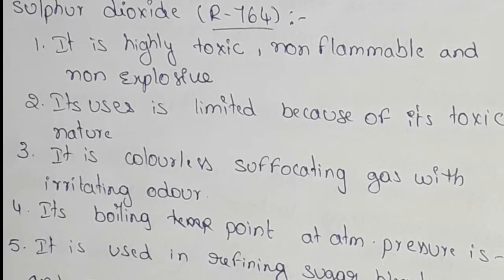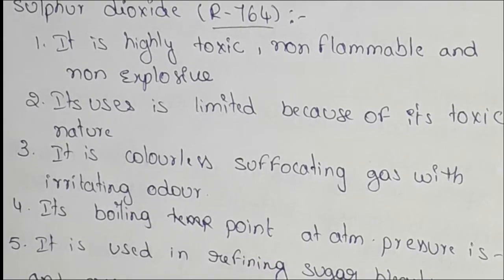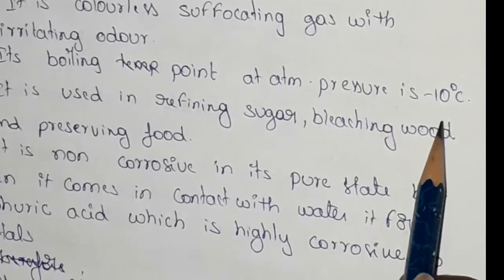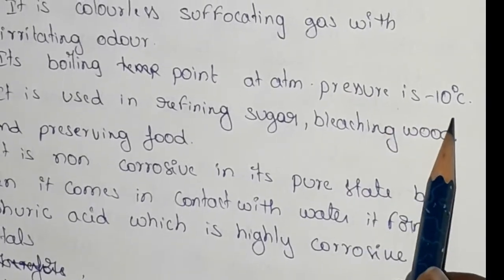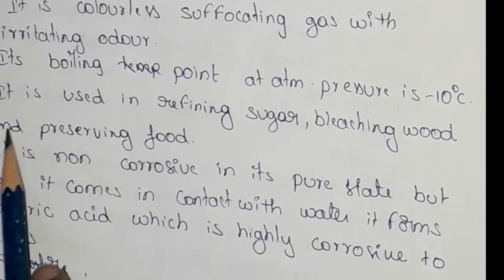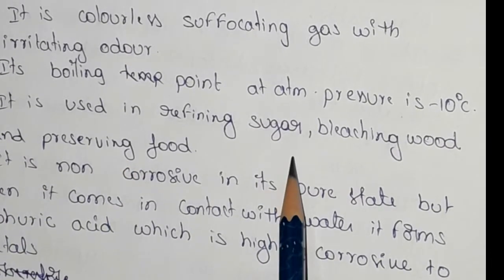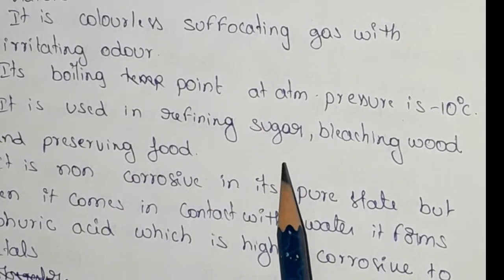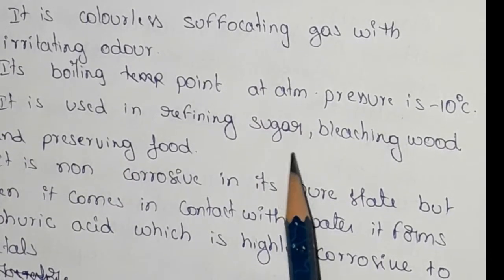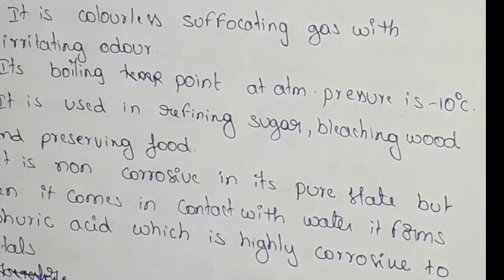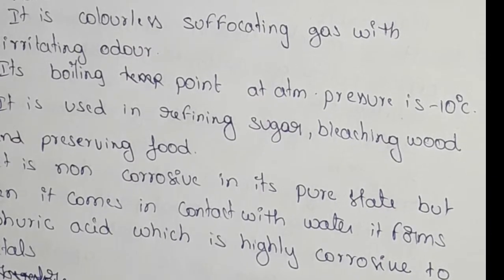Its boiling point at atmospheric pressure is minus 10 degree centigrade. It is used for refining sugar, bleaching wood, and preserving food containers.